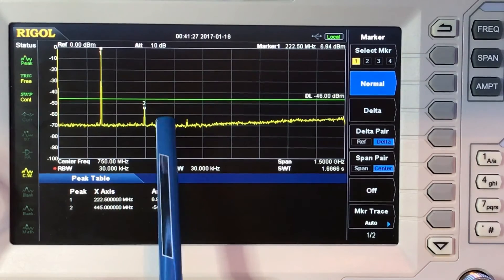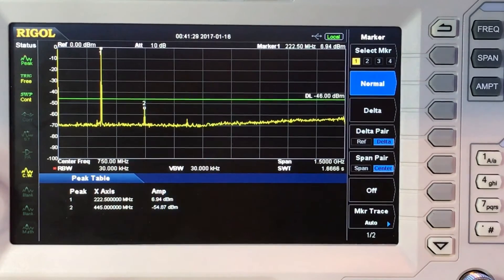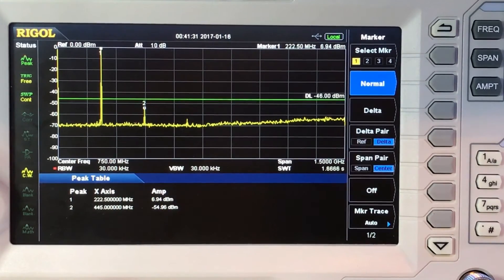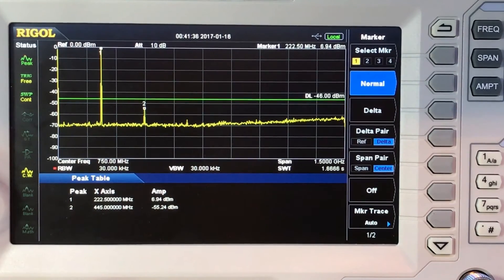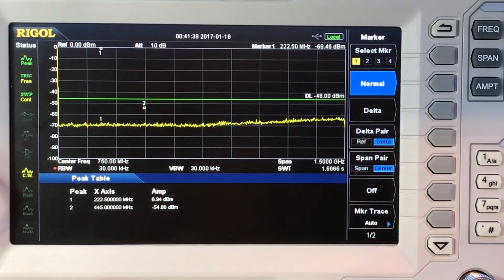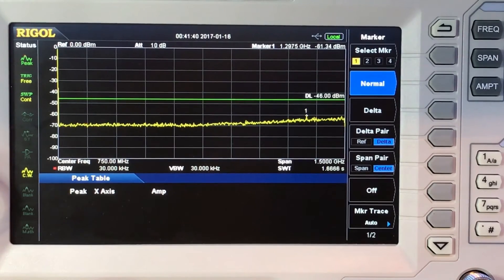You can see right here, here's a third harmonic. There's nothing there. Now compare this to what we had before in the previous video. Let me unkey here so you can see all the harmonics go away. You can see that third harmonic just disappeared there.